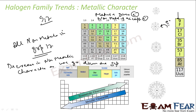Chlorine has more tendency to accept electrons due to its small size. Group 17 elements have a huge tendency to accept one electron because they will attain noble gas configuration by doing so. But the tendency to accept electrons decreases down the group. Tendency to accept electrons is non-metallic character, so non-metallic character decreases down the group.